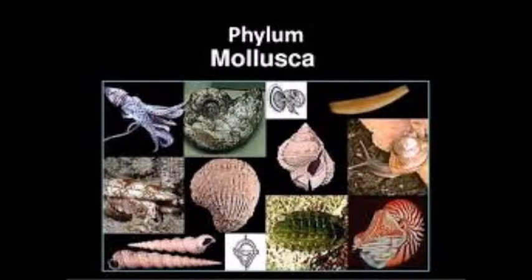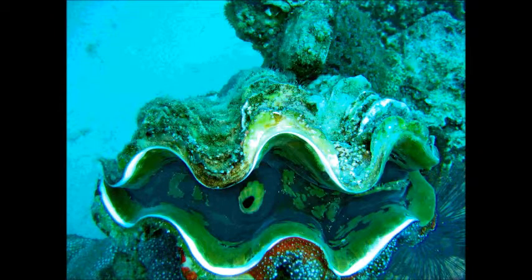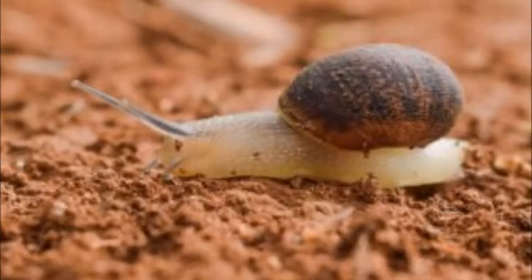Next we have Mollusca. The Mollusca consist of clams, snails, and octopus. Molluscs have bilateral symmetry. The organisms in this phylum contain tissues. Their digestive systems form, but the mouth comes in first. So much data collected — let's find out more.